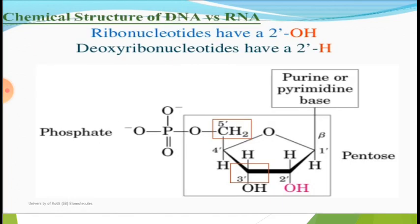Regarding the chemical structure of DNA versus RNA, if we look at the major differences — DNA has a double helical structure while RNA has a single-stranded structure. DNA involves millions of nucleotides, while RNA involves hundreds to up to thousands of nucleotides.